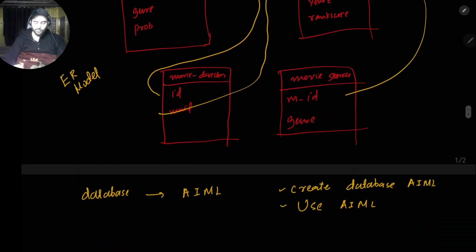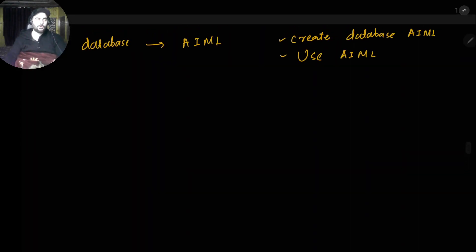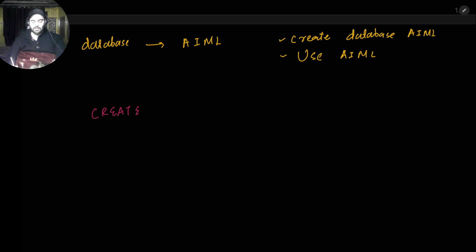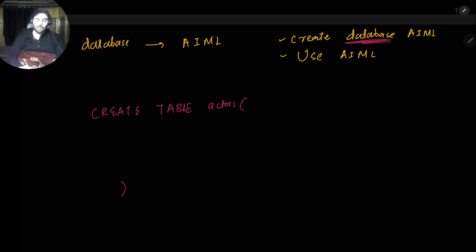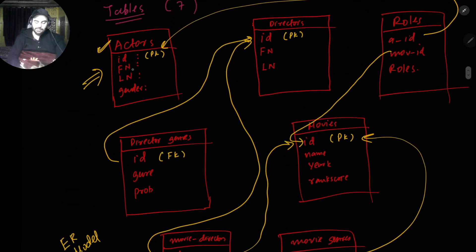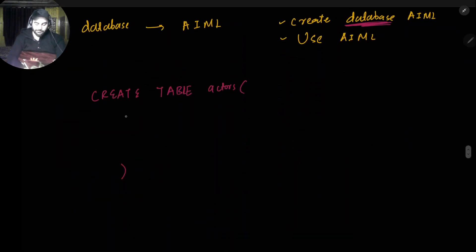Now I'll show you how the CREATE TABLE command works. The first table we'll create is actors. The syntax is: write CREATE, then TABLE, then the table name — in this case 'actors'. It's not case-sensitive but for readability, write SQL keywords in capitals as the norm. Then write the attributes: id, first_name, last_name, and gender, enclosed in parentheses.